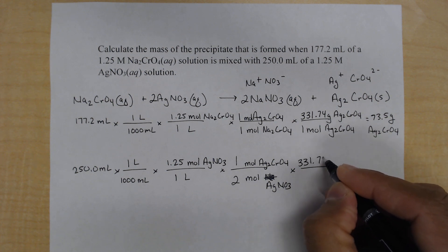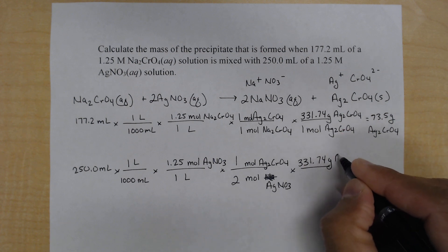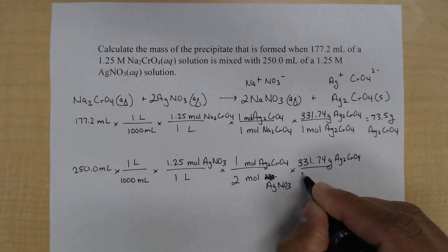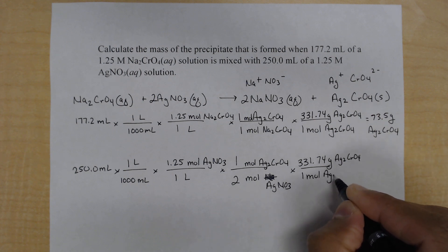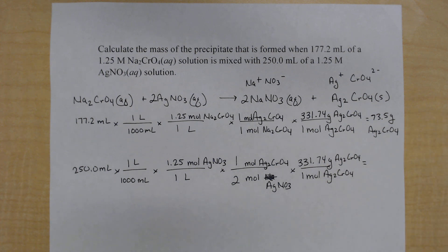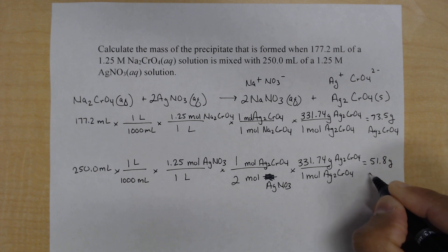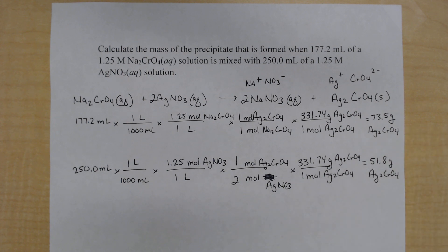Since we're interested in our mass produced, notice this last step is exactly the same. And when we do our calculations, we see that the mass produced here, 51.8 grams of the silver chromate can be produced. So we have two answers here.